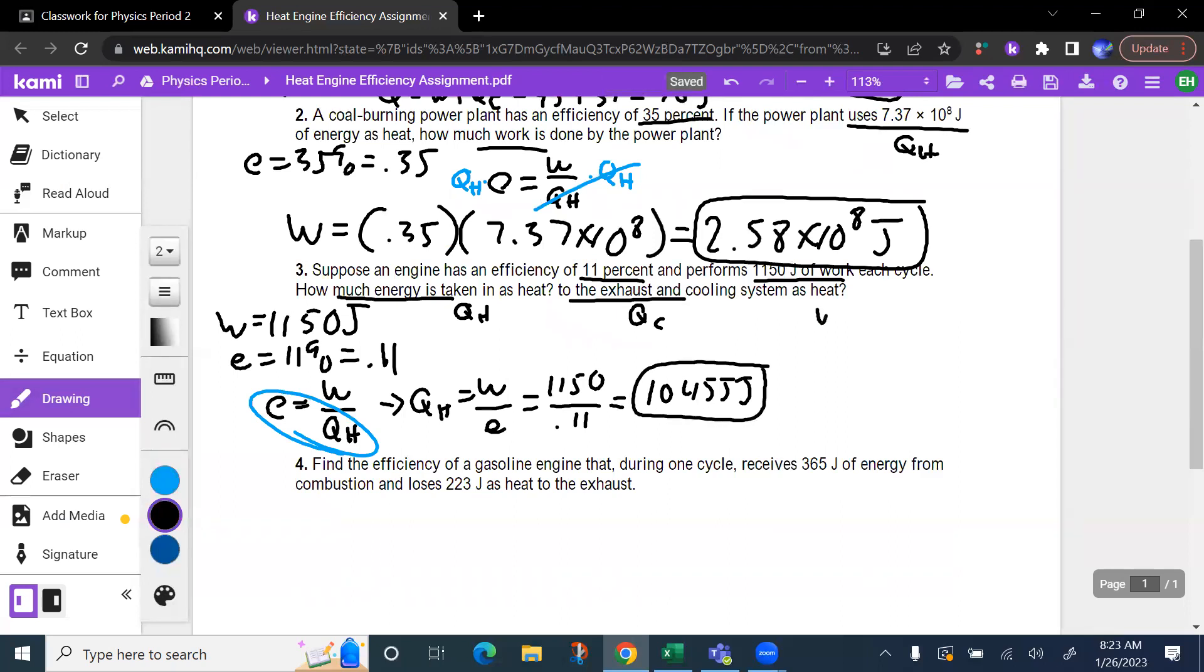Now for the work, we're going to take work equals Qh minus Qc. And what we'll do to get Qc is we're going to add Qc over to the left and subtract work over to the right. And you get Qc is equal to Qh minus the work. So Qh was 10,455 minus the work of 1150. And we get about 9,300 joules.